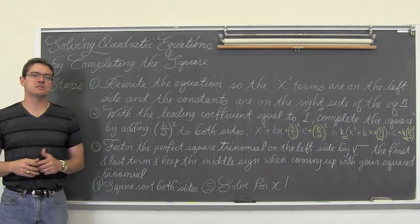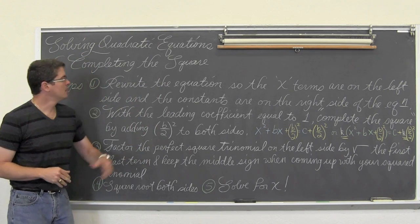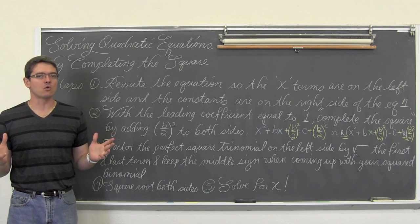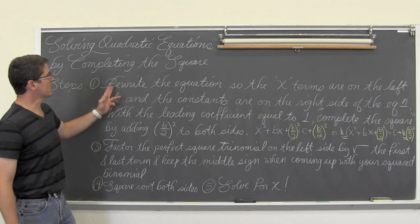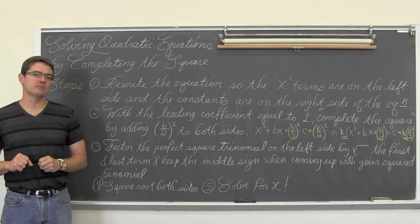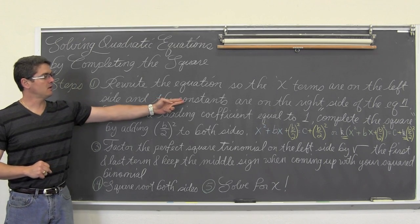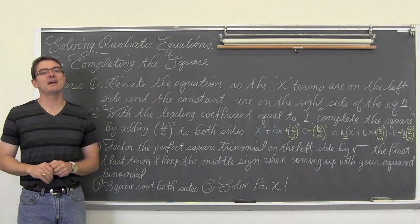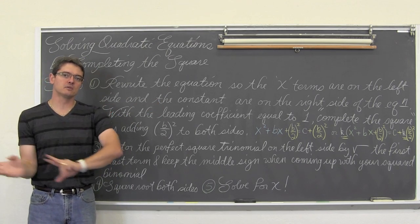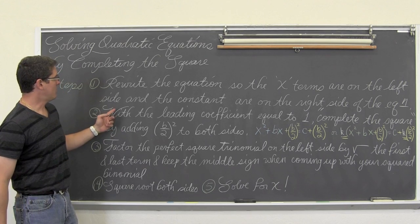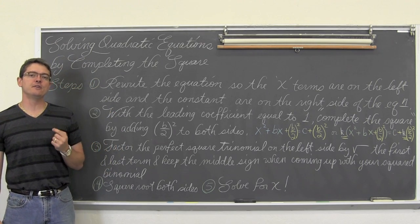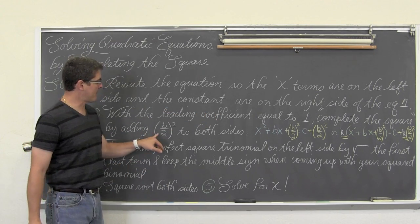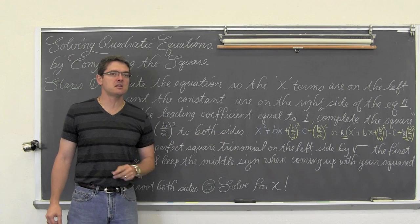We are going to learn completing the square in this video for solving equations. First, we rewrite the equation so that all the variable terms are on the left-hand side and the constant is on the right-hand side. You cannot complete the square unless the leading coefficient is equal to one. Then we complete the square by adding (b/2)² to both sides of the equation.